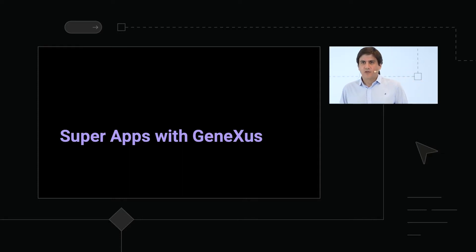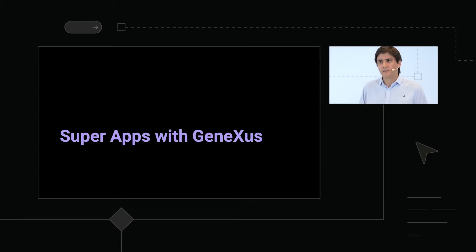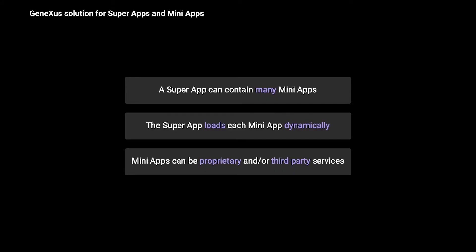In GeneXus, we have been developing the technology to generate this kind of solution, and nowadays it is a reality with GeneXus 18. You can build this kind of solution with GeneXus 18. When we talk about building a super app solution with GeneXus, we specifically mean building a super app or converting an app into a super app that will be able to load as many mini apps as necessary, depending on the ecosystem or businesses involved. Those mini apps will be dynamically loaded — they will not be previously installed on the device, but rather loaded on demand and executed as native applications. Mini apps can be developed internally or through third-party partners.